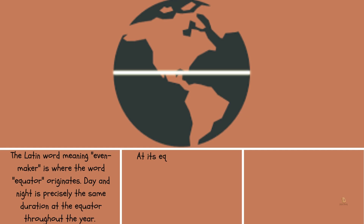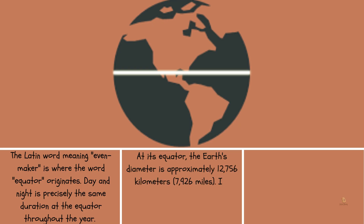At its equator, the Earth's diameter is approximately 12,756 kilometers, or 7,926 miles. Its diameter at the poles is approximately 12,714 kilometers, or 7,900 miles.